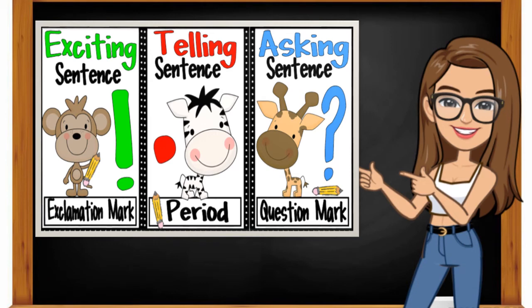In this chapter, we are going to learn three punctuation marks: exclamation mark, full stop, and question mark. This symbol is called exclamation mark. This one is called period, or we call it full stop. Then we have a question mark.